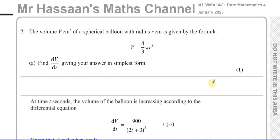The first part says: a volume V centimeters cubed of a spherical balloon with radius R centimeters is given by the formula V equals 4 over 3 pi R cubed.